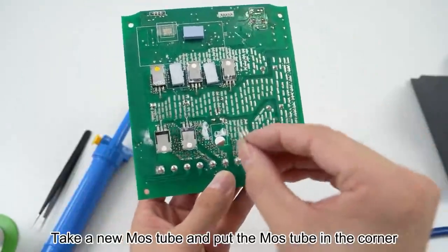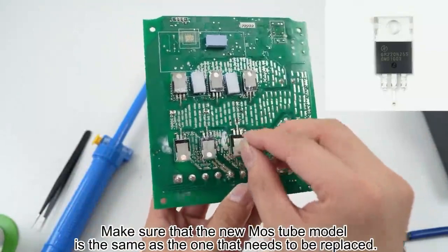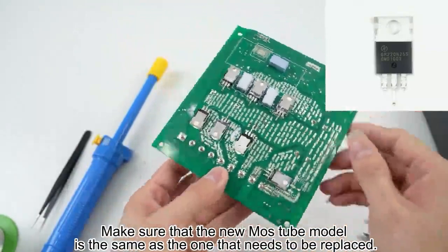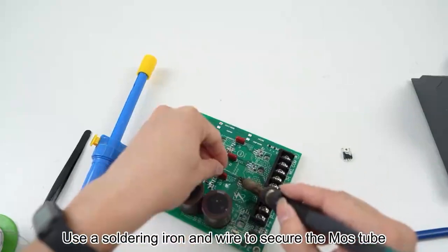Take a new MOS tube and place it in position. Make sure that the new MOS tube model is the same as the one that needs to be replaced. Use a soldering iron and wire to secure the MOS tube.